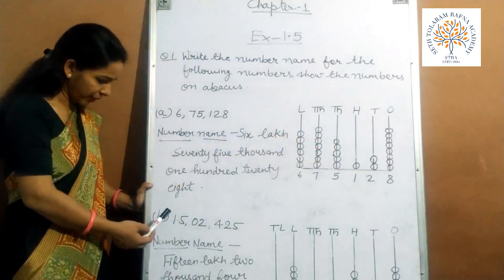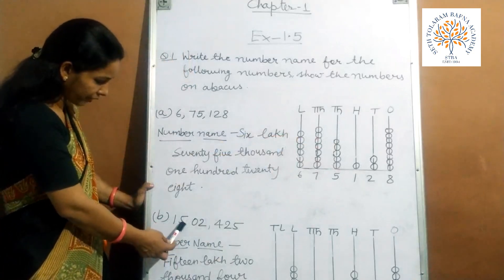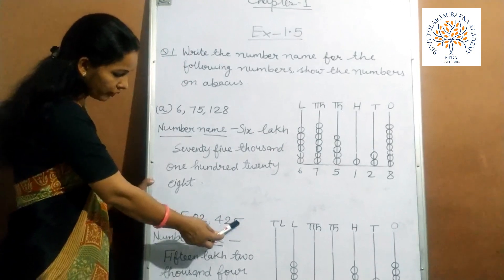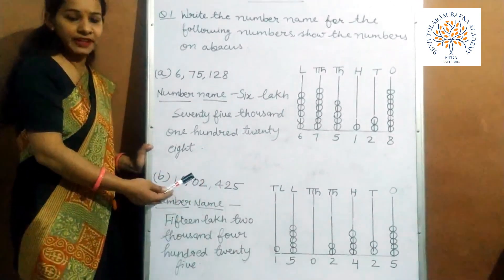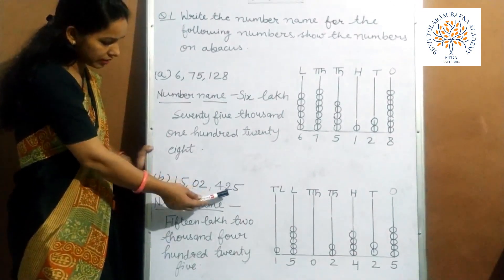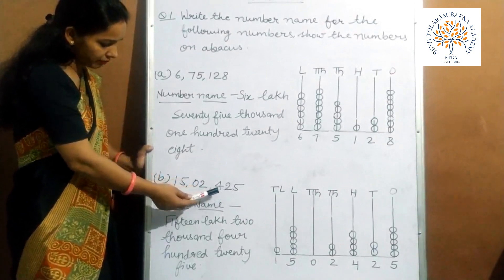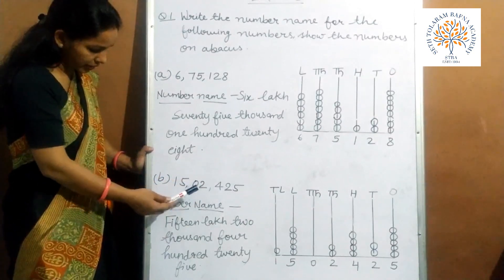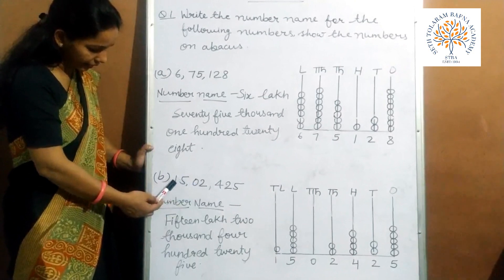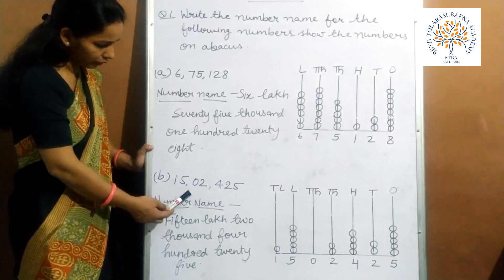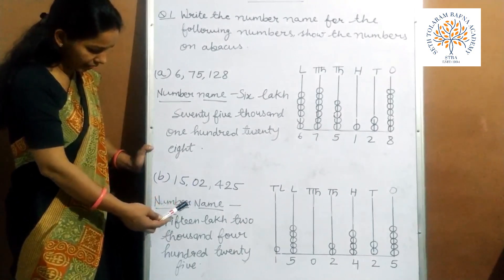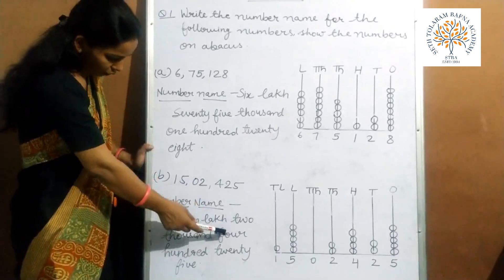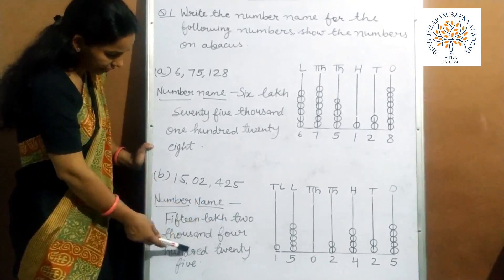Now the second part: 1,5,0,2,4,2,5. Again from the Indian place value chart — 1s, 10s, 100, 1000, 10,000, lakh and 10 lakh. So the number name of this number is 15,02,425.